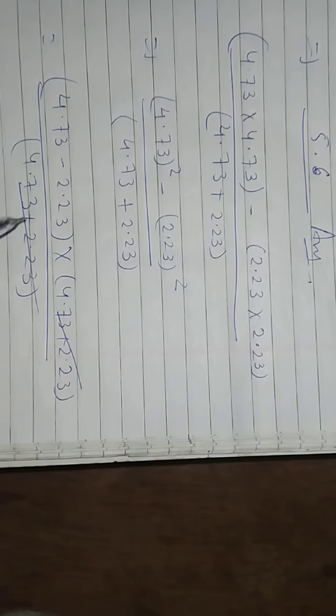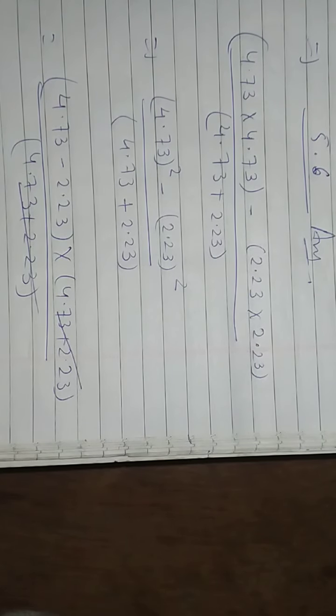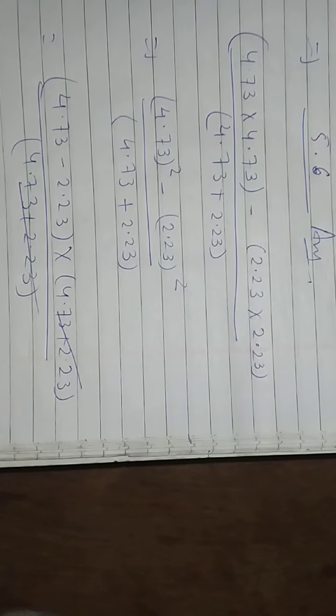Subtract 1-1 and plus 1-1. Here 4.73 plus 2.23 — this term cancels this term. Subtract: 3 minus 3 is 0, 7 minus 2 is 5, 4 minus 2 is 2. So its answer is 2.50.